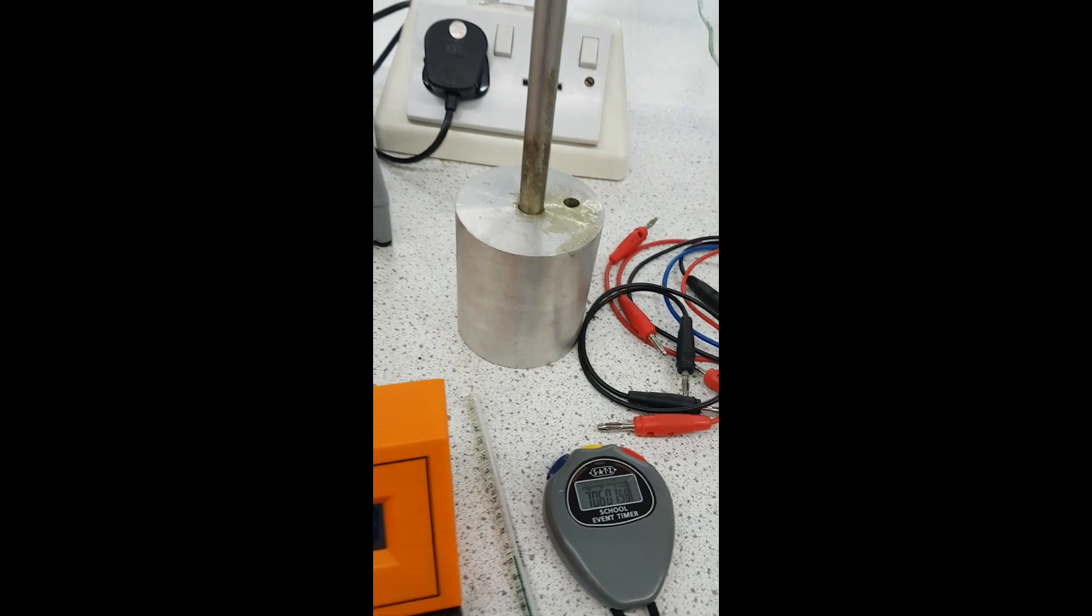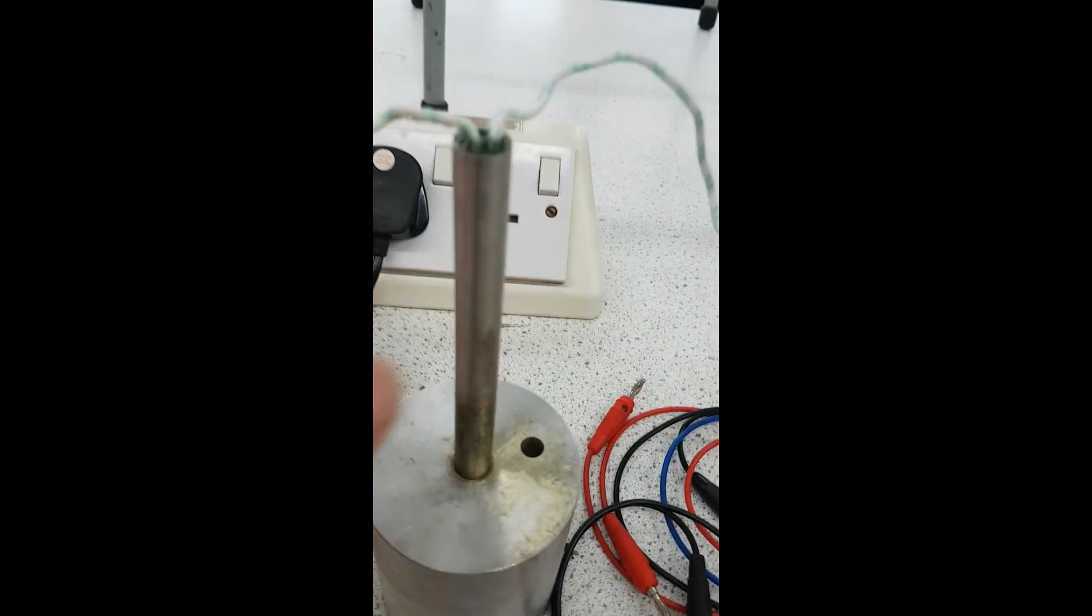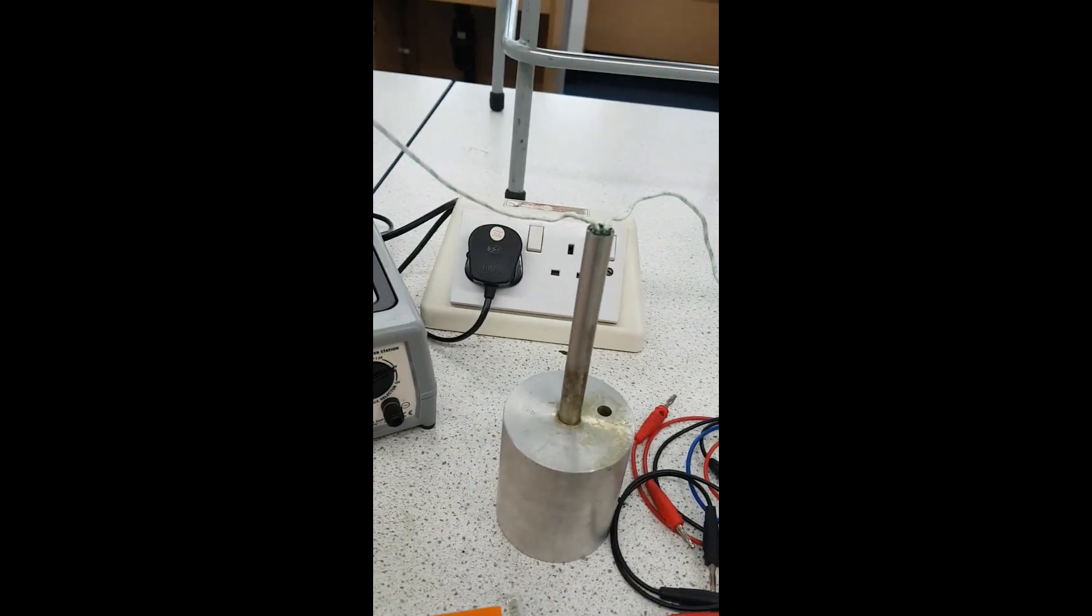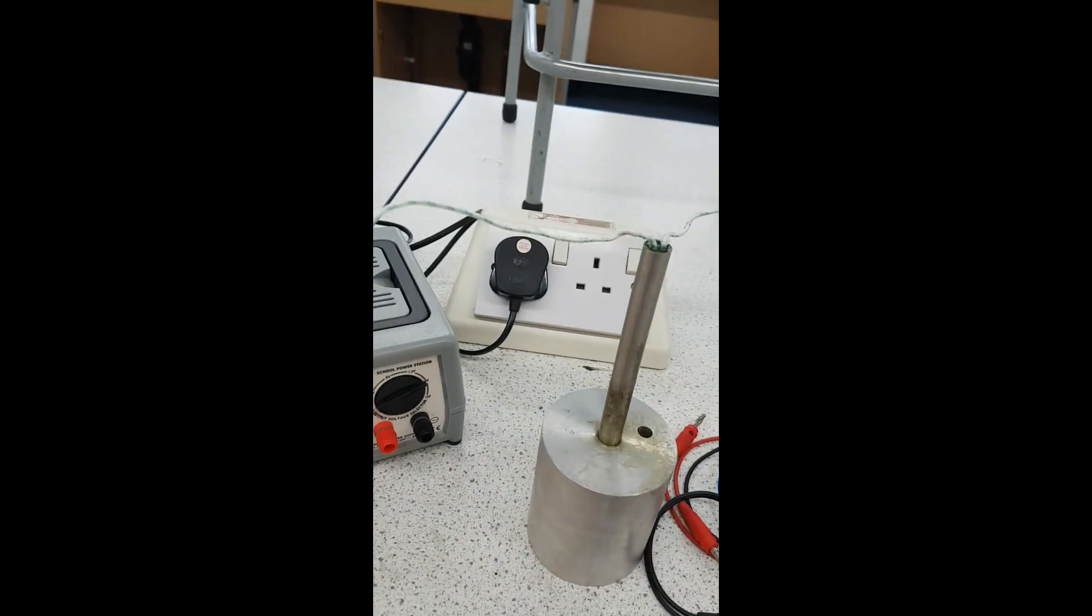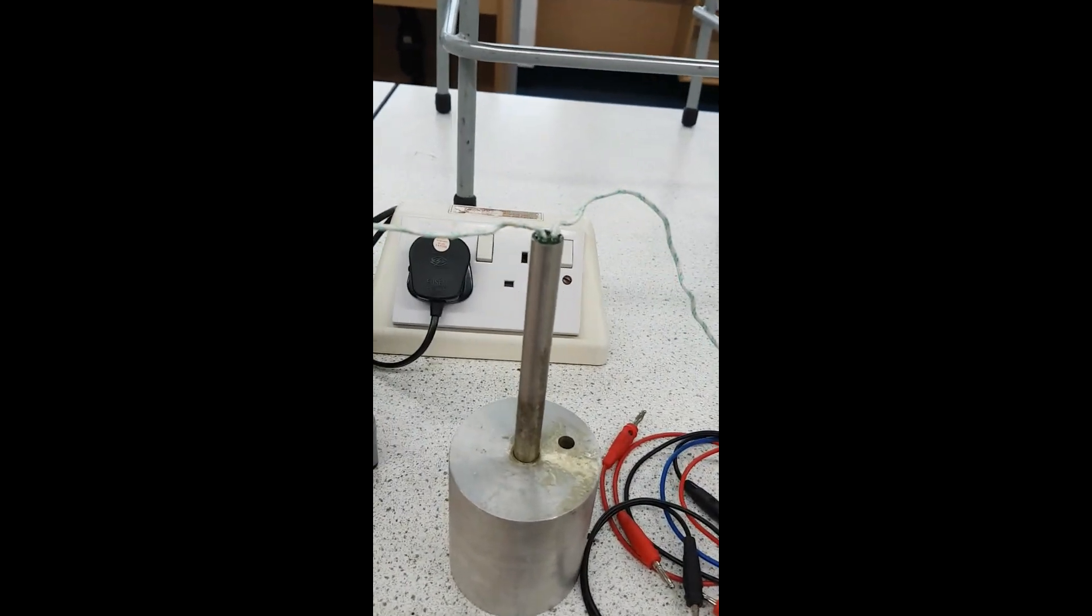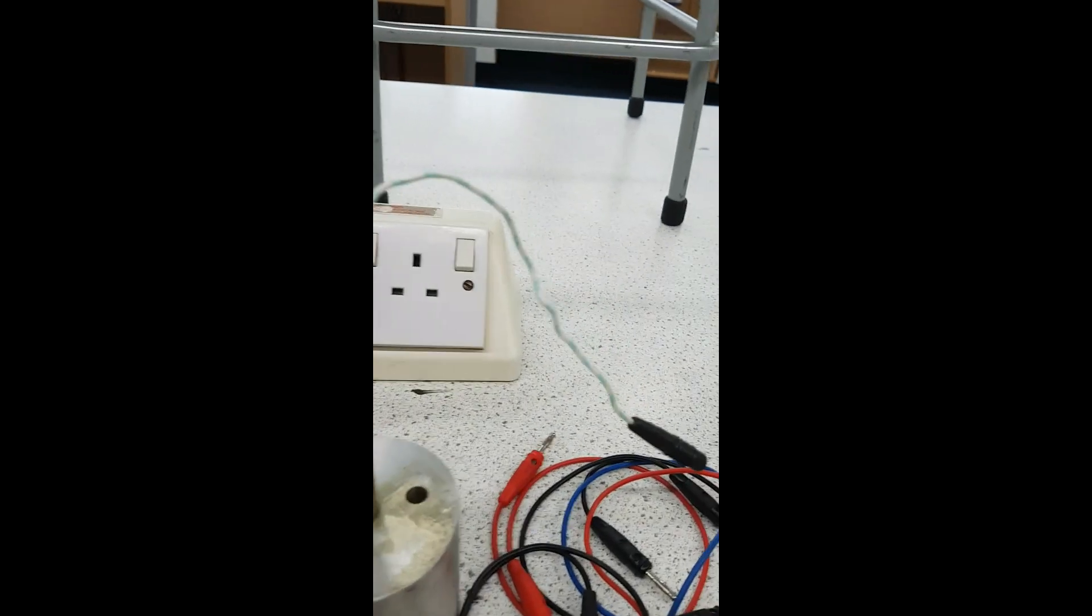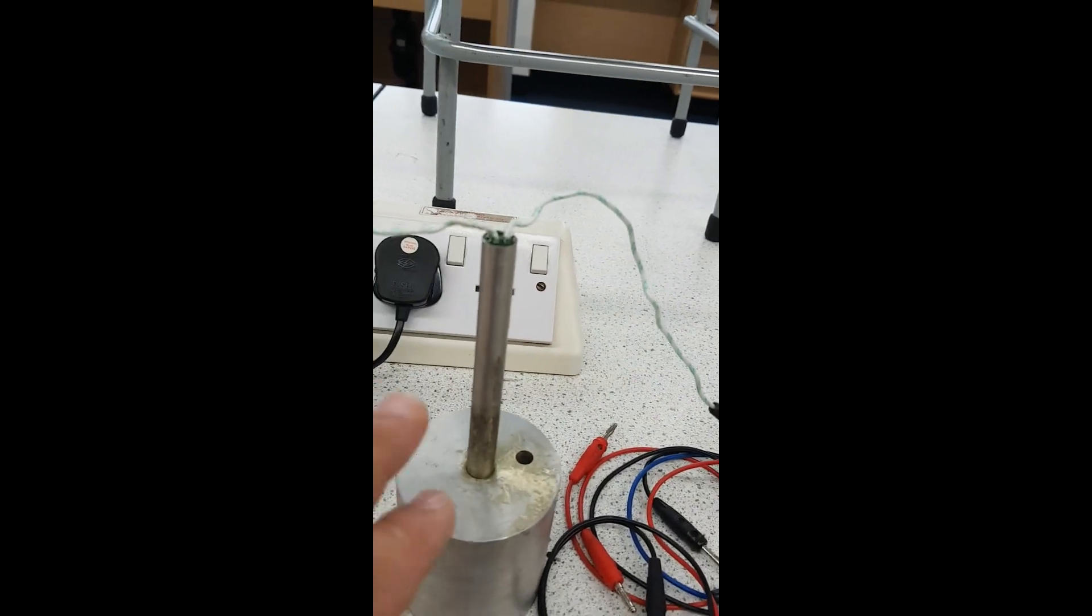So again, you'll need the aluminum block, this heater. Now guys, with this heater, just separate it to the left and the right, the wires. That's just so that the setup is nice and neat. So the left hand wire will be on the left hand side, the right will be on the right hand side.